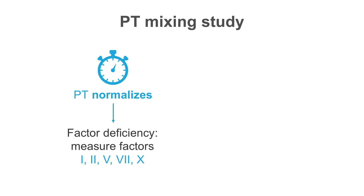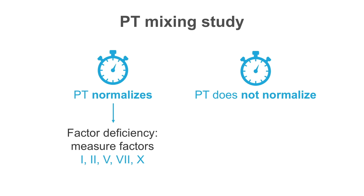If the PT normalizes, we are dealing with a factor deficiency and the involved factors may be factors 1, 2, 5, 7, and 10. If the PT does not normalize, then most likely we are dealing with an inhibitor, and the most common inhibitor involving the pathway for PT is factor 5 inhibitor.